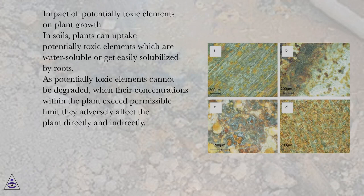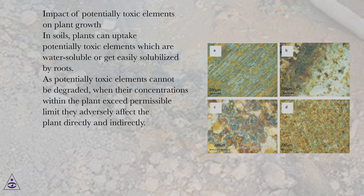Impact of Potentially Toxic Elements on Plant Growth. In soils, plants can uptake potentially toxic elements which are water-soluble or get easily solubilized by roots. As potentially toxic elements cannot be degraded, when their concentrations within the plant exceed the permissible limit, they adversely affect the plant directly and indirectly.